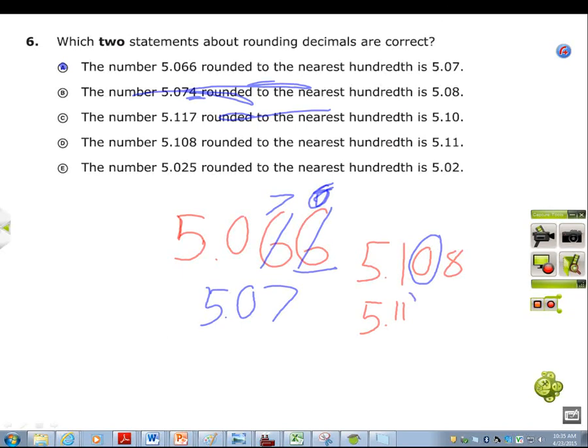So the zero makes it go up. The eight makes the zero go to one. So that goes to one, and you cross out the eight, and now this is 5.11.